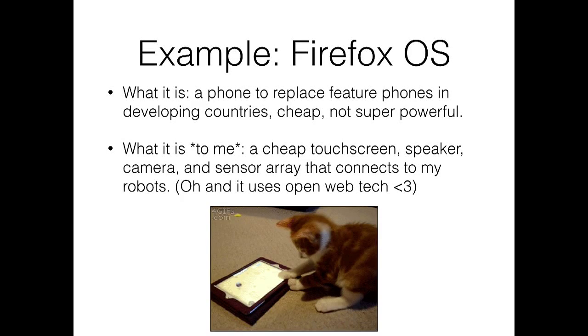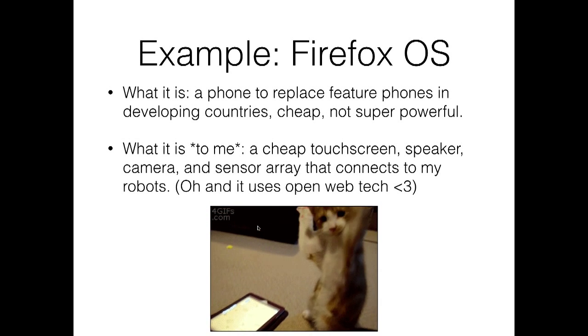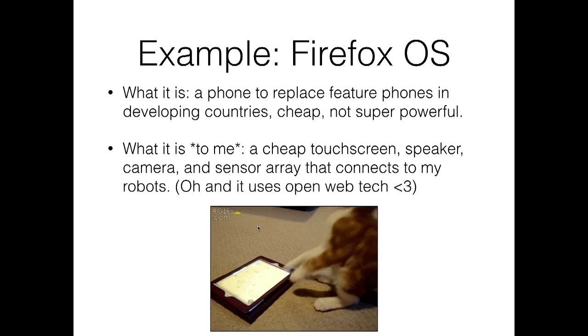A really great example is the Firefox operating system. Firefox OS runs on cheap touchscreen phones — cheap to make, cheap to purchase, and not very powerful. A lot of people said it's cool for developing countries replacing feature phones. But when I got a hold of one, I thought: this is a $70 touchscreen with an accelerometer, a speaker, a camera, and all these things I can use in robotics — and it uses the web tech I already use every day. Writing a Firefox OS application is writing a web page with one extra file: a manifest, a JSON file that tells the phone what to load and how to load it. Kind of like a package.json for a Node application.